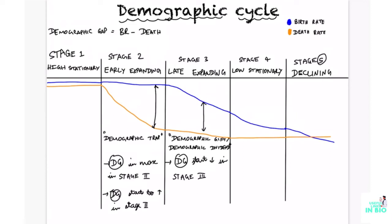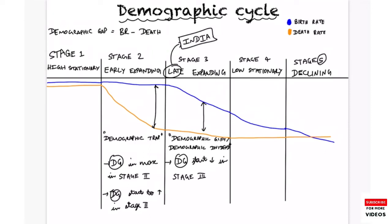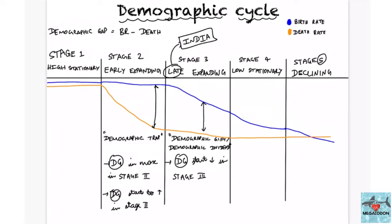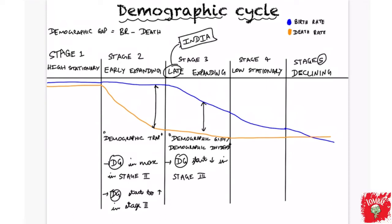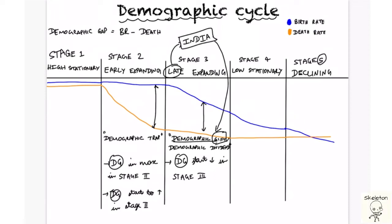India is currently in the late expanding phase of the demographic cycle, which is also the demographic gift or demographic dividend stage. As a memory aid: various procedures in India tend to get delayed, so India is in the late expanding phase; and being Indian means you're gifted, helping you remember that India is in the demographic gift stage. These clues can help you remember key facts about the demographic cycle.